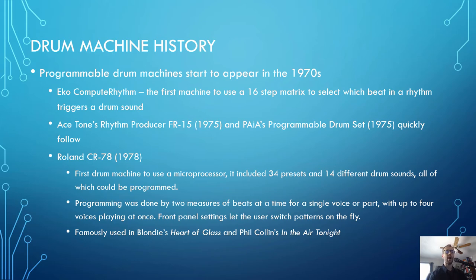Here is a look at the Sideman circuitry — you have that rotating brush appendage that makes contact with different plates, triggering the sound to play back. But none of these were programmable; you were dealing with presets only. So in the 70s, we first get programmable drum machines, starting with the Echo Compute Rhythm, which is the first machine to use a 16-step matrix to select which beat in a sequence triggers a drum sound.